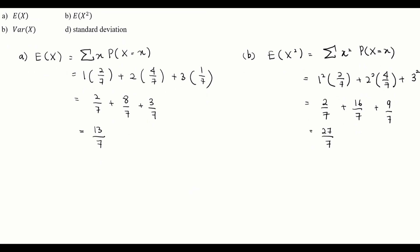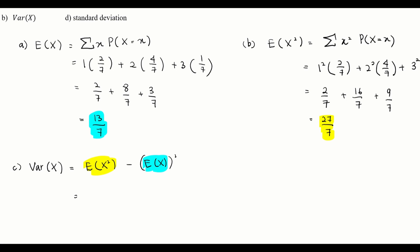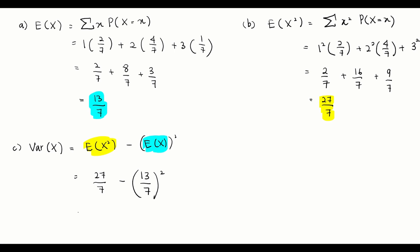Now for part (c), we find the variance of X. The formula for variance of X is E(X²) minus [E(X)]². Here, E(X²) is 27/7 and E(X) is 13/7. So the variance equals 27/7 minus (13/7)², which gives us 20/49. So the variance of X is 20/49.